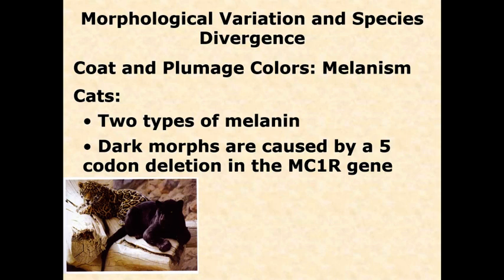So it's a nice, easy loss-of-function mutation that can lead to darker pigmentation. Now, in coats where there are patterns, there are different regulatory elements that control this gene across different regions of the skin. But we're going to look at what happens when the gene is just not functional at all, and how that results in a darker coat. The pattern is an interesting question — we'll touch on that a little bit with a fruit fly model later.